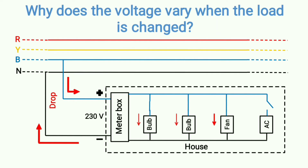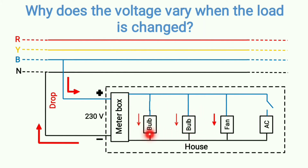The moment you connect these three loads, they each draw a certain amount of current. The two bulbs take lesser current compared to the fan — I've shown this with arrows of different thickness to illustrate which load draws more or less current. A bulb has a rating of around 40 watts, while a fan has a higher rating like 100 or 200 watts, which is why the current drawn by the fan is higher.